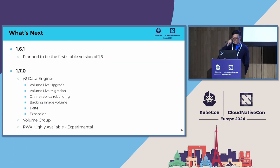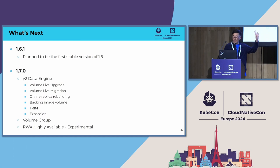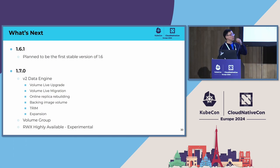What's next? In 1.6.1, releasing this week — give it a try, it should be the first stable release of 1.6. For 1.7.0, what we want to do is feature parity for the V1 data engine in V2: live upgrade, migration, replica rebuilding online, backing image volumes, trim, expansion, and volume group. We have volume group snapshots and want to integrate volume group restore as well. Read-write-many HA experimental support is also planned. This is what we plan for the upcoming feature release in July, so please look forward to it.